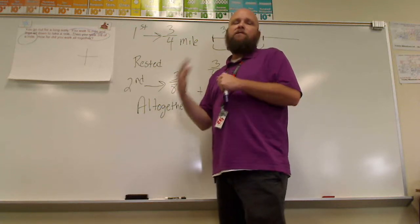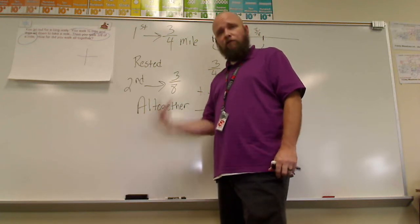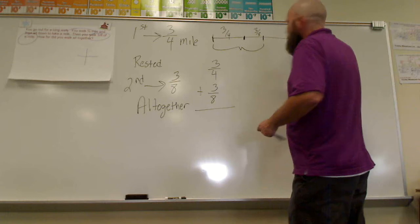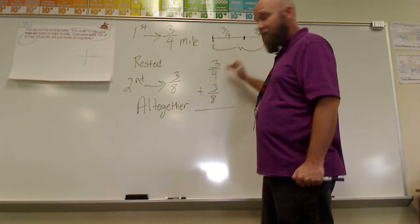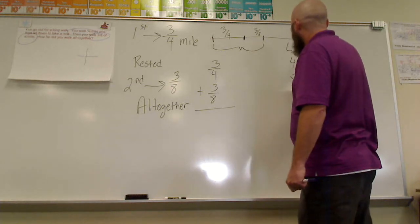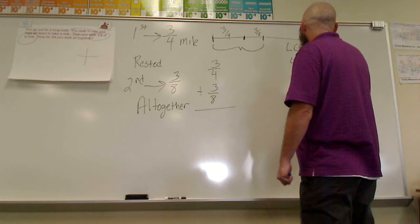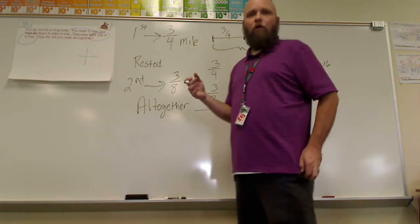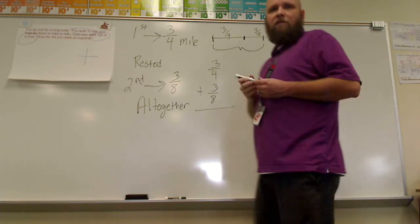Now you'll notice that these do not have the same denominator. As you learned last year, you can't add fractions unless they have the same denominator. So we're going to find the least common denominator. We take a multiplication chart and find the first number that appears in both the row starting with four and the row starting with eight. Counting by fours: four, eight, twelve, sixteen. Counting by eights: eight, sixteen, twenty-four. The first number in both rows is eight, so the least common denominator is eight.